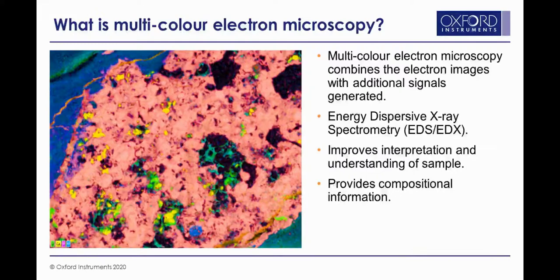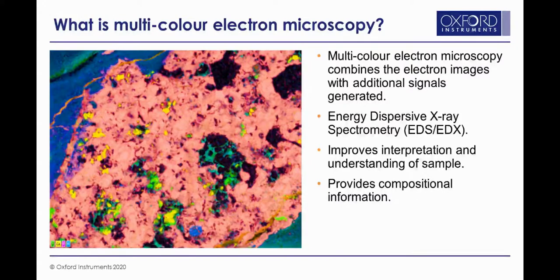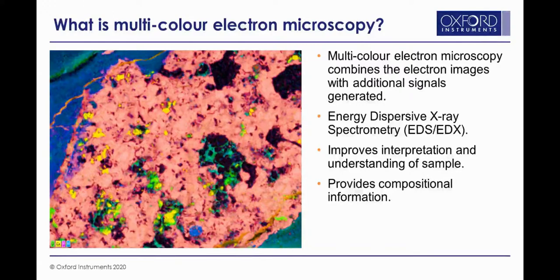In the example shown here, we've used a technique called energy dispersive X-ray spectrometry, also known as EDS or EDX. EDS detects and measures the energy of X-rays emitted from the sample. The energy of the X-ray indicates the element it originates from, thus providing information about the composition of the sample. This also results in striking images which massively aid interpretation.